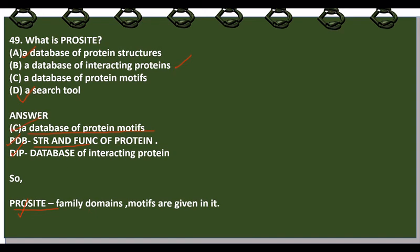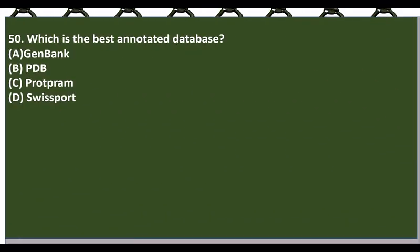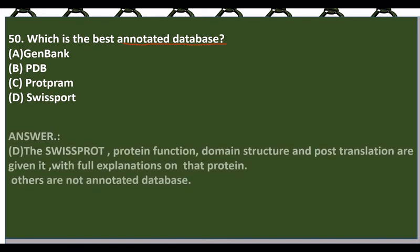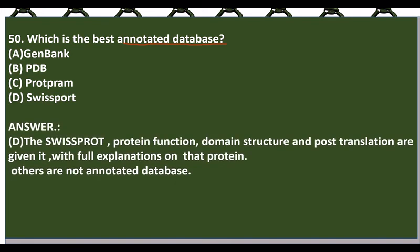Which is the best annotated database? The answer is SwissProt. Annotation means providing comprehensive information. SwissProt gives full details on protein function, domain structure, post-translational modifications, and other properties with full explanation. Other databases like GenBank, PIR, and PDB provide only certain information without the level of annotation that SwissProt offers.